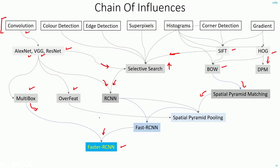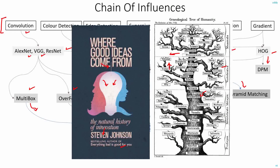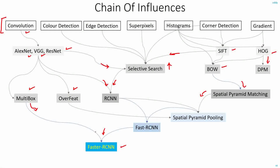We can see that the authors of Faster R-CNN didn't just wake up one day and imagine this network architecture. As Steven Johnson notes in his book, ideas don't just happen — they usually evolve. And it was this thought or ideology that got me into the rabbit hole to explore all the different concepts and ideas behind each of these papers.